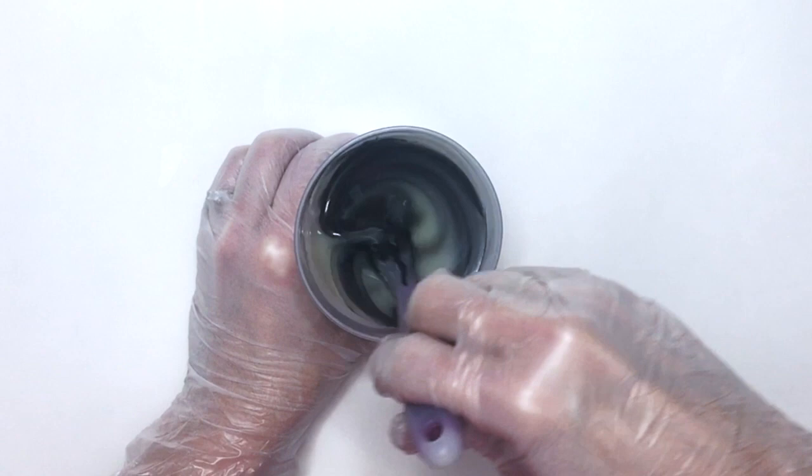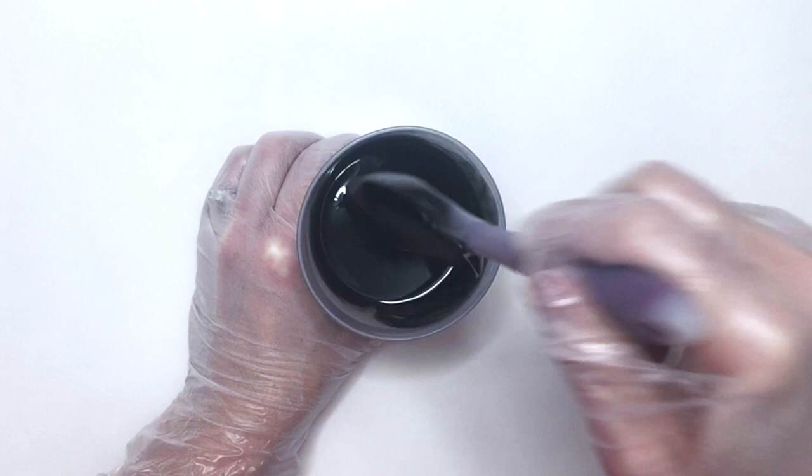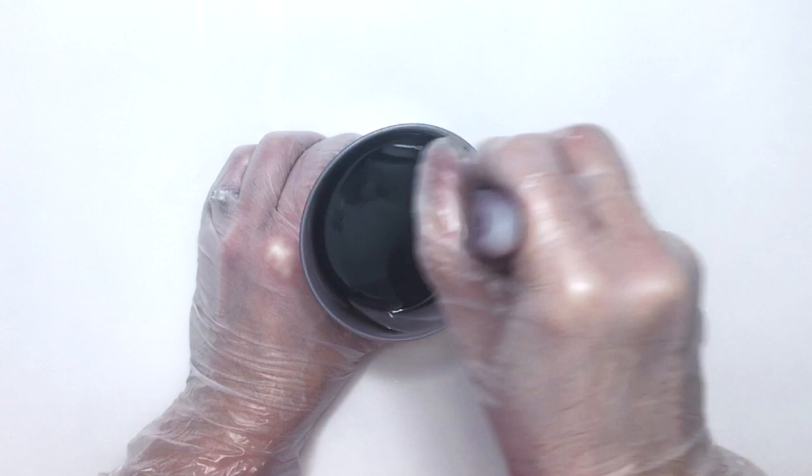For the Pitch Black Mica, I do recommend one teaspoon per one cup of soap to get the color that it looks dry. Otherwise, if you dilute it more, it will look gray.